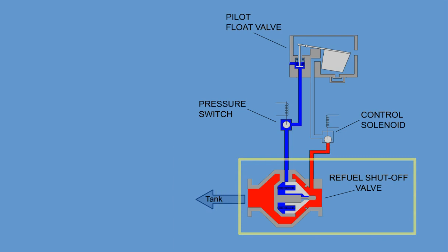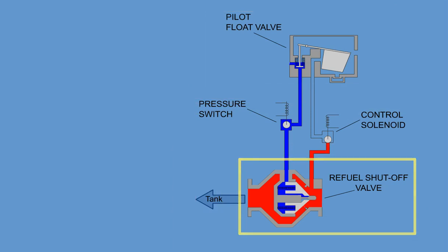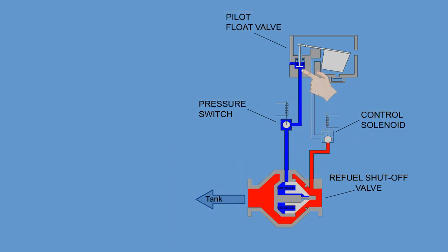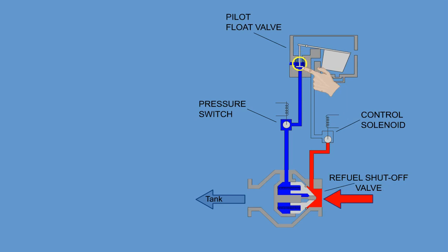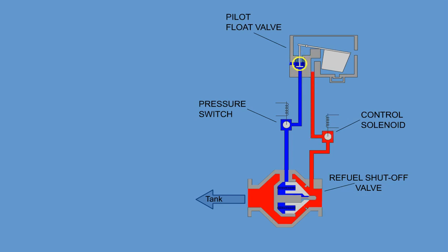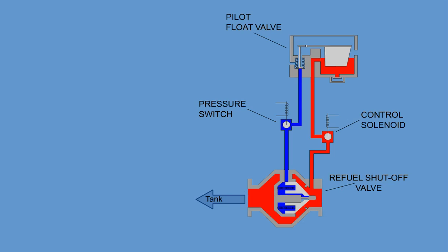The refuel shut-off valve is a hydromechanical device that operates from the pressure differential applied to an internal poppet assembly. The high-level float pilot valve controls the refuel shut-off valve by a pilot line connected between the shut-off valve and the pilot valve. When the pilot port is open and pressure is applied to the valve inlet, higher pressure on the upstream side of the poppet causes the valve to open. When the pilot port is closed, fuel pressure applied to the inlet will equalize on both sides of the poppet. The piston chamber on the downstream side of the poppet has a larger surface area than the inlet side, causing the closing force to exceed the opening force. A spring acting on the poppet adds to the hydraulic force to close the valve.